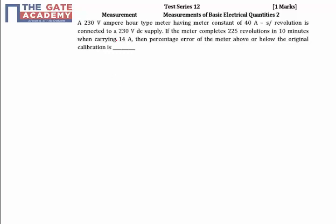In the given problem, a 230 volt ampere-hour meter with a meter constant of 40 amperes-second per revolution is connected to a 230 volt DC supply. If the meter completes 225 revolutions in 10 minutes when carrying 14 amperes, we need to find the percentage error of this meter. First, we calculate what the meter is recording.